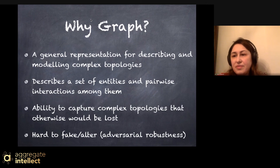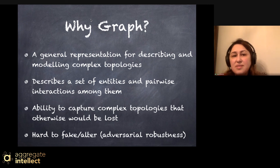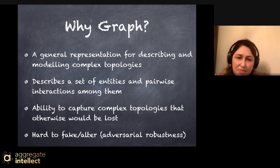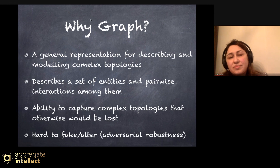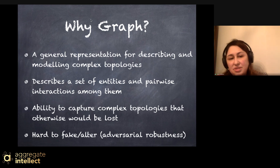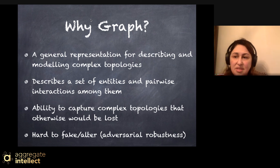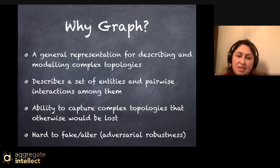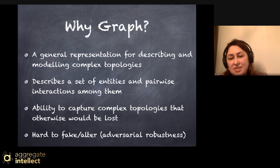So why is graph useful? Graphs generally represent a description and modeling of complex topology. They show the interdependence of instances, long-range relationships, and describe a set of entities and pairwise interactions between nodes and edges. Graphs have the ability to capture almost any complex topology that would be lost in other data structures. Also notably, graphs are very hard to fake — they are quite immune to adversarial attacks.